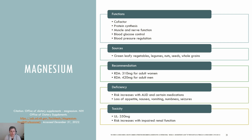Magnesium is a mineral that is a cofactor in more than 300 enzyme systems that regulate reactions like protein synthesis, muscle and nerve function, blood glucose control, and blood pressure regulation. Magnesium is required for energy production, oxidative phosphorylation, and glycolysis. Sources include green leafy vegetables, legumes, nuts, seeds, and whole grains. The RDA for magnesium is 310 milligrams for adult women and 420 milligrams for adult men. Magnesium deficiency is not likely in otherwise healthy people; however, low intakes or losses due to health conditions like alcohol use disorder or the use of certain medications can contribute. Signs can range from loss of appetite, nausea, and weakness to numbness, seizures, and muscle cramps. The UL for magnesium is set at 350 milligrams per day. High intakes of magnesium from foods is not typically a concern due to the kidneys' role in eliminating excess magnesium in the urine; however, this can be a concern with someone who has impaired renal function.